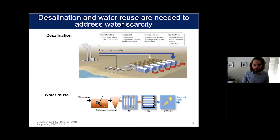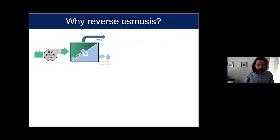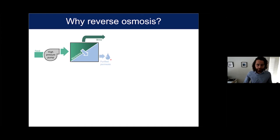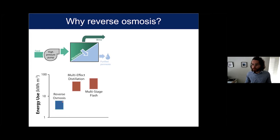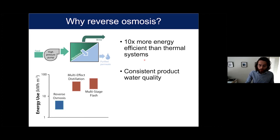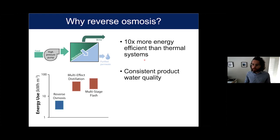Why has reverse osmosis become so dominant in advanced water treatment? Reverse osmosis works by taking feed water, putting it through a high pressure pump, then into a membrane module where water permeates through the membrane while most other things are rejected into a brine stream, leaving purified permeate water. Reverse osmosis is so widely used partly because it's very efficient — this shows the energy use of RO compared to thermal separation processes like multi-effect distillation and multi-stage flash. RO is around an order of magnitude lower in energy consumption and really approaches the thermodynamic minimum.